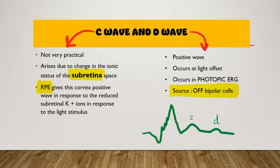The C wave and D wave are not commonly seen. The C wave arises due to changes in ionic status in the subretinal space — the space between the RPE and the neurosensory retina — and is considered to come from the retinal pigment epithelium, usually a positive wave caused by reduced subretinal potassium ions in response to light stimulus. The D wave is smaller than the C wave, also a positive wave, occurring in photopic ERG, sourced from the off bipolar cells. We usually do not interpret C and D waves.